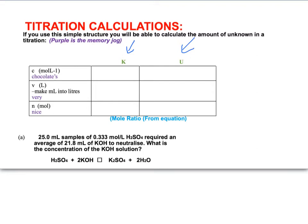If you follow this grid, we have K U across the top, standing for that known and unknown solution, and down the side we have Chocolates Very Nice, and that's standing for concentration, volume, and number of moles. So when you draw this grid up, when you're using it in your calculations, make sure that you include these units beside the C V N. Chocolates Very Nice.